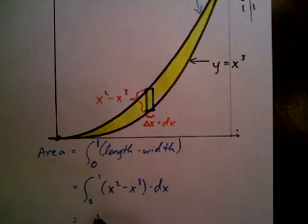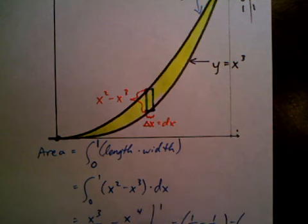That's it. All we have to do is, to integrate this, is just use our power rule. x cubed over 3 minus x to the 4th over 4, evaluated from 0 to 1, which would be 1 third minus 1 fourth minus, and then the 0. Well, it's just going to be 0, 0 minus 0.